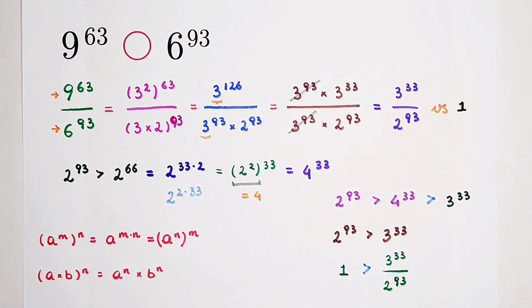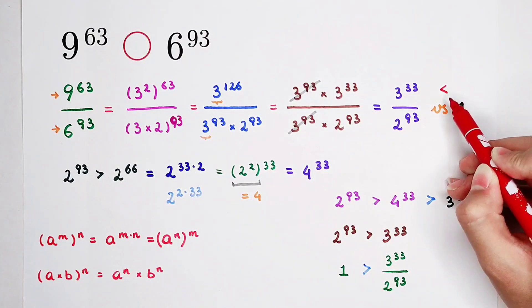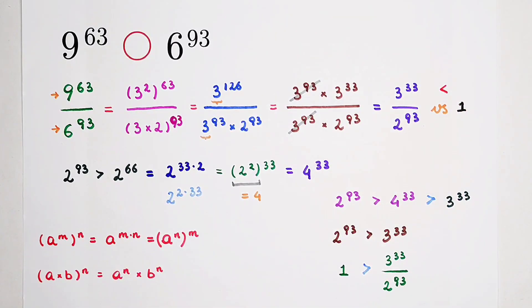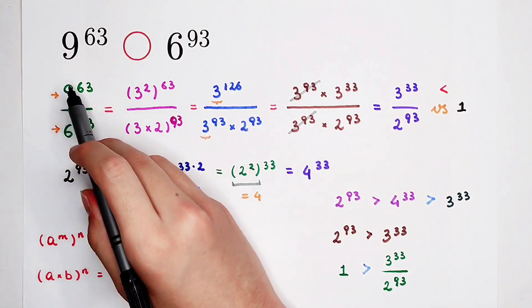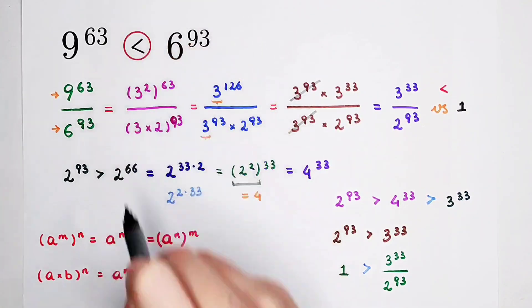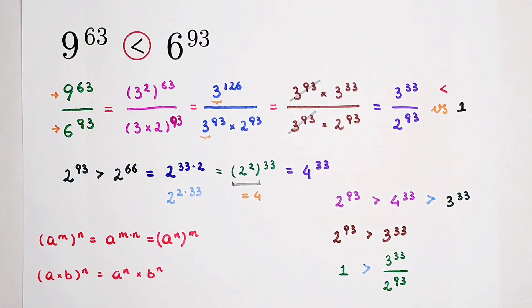We got the answer! The division is smaller than 1, which means the left-hand side is absolutely smaller than the right-hand side. So 9 to the power of 63 is smaller than 6 to the power of 93. Don't forget to give a thumbs up and subscribe to the channel for more videos. See you next time, bye!